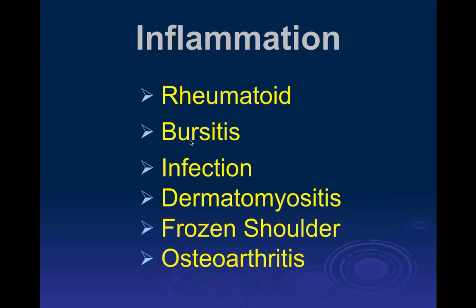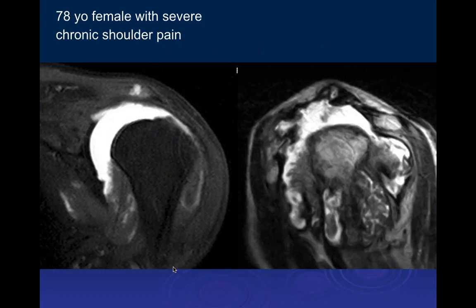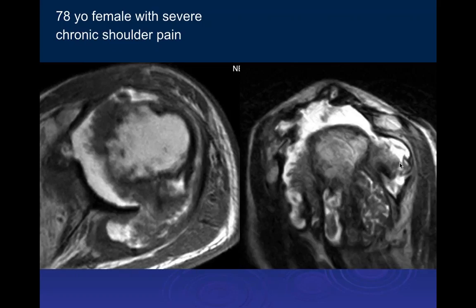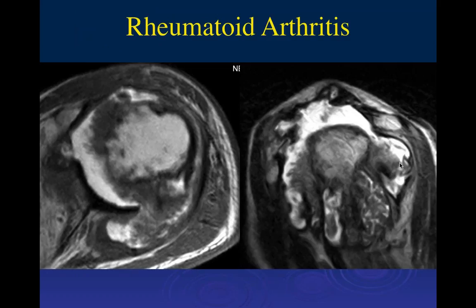Now let's discuss inflammatory disease of the shoulder — rheumatoid arthritis, bursitis, infection, and other inflammatory conditions. In this 78-year-old female with severe chronic shoulder pain, the coronal PD fat-sat arthrogram and sagittal image show marked synovial thickening in the axillary pouch and subacromial region, with contrast communicating freely into the subacromial-subdeltoid bursa, indicating a full-thickness rotator cuff tear.